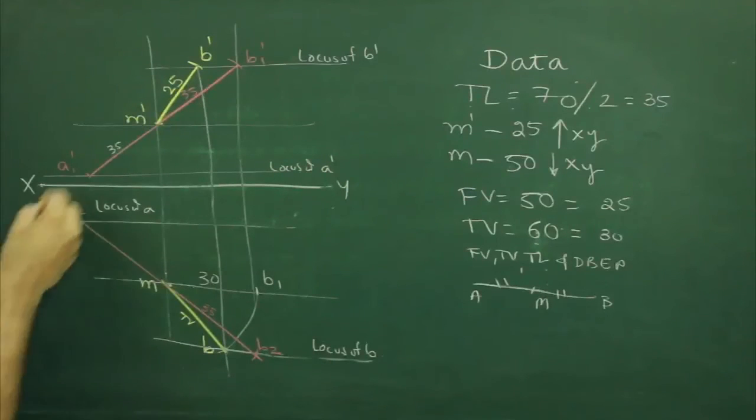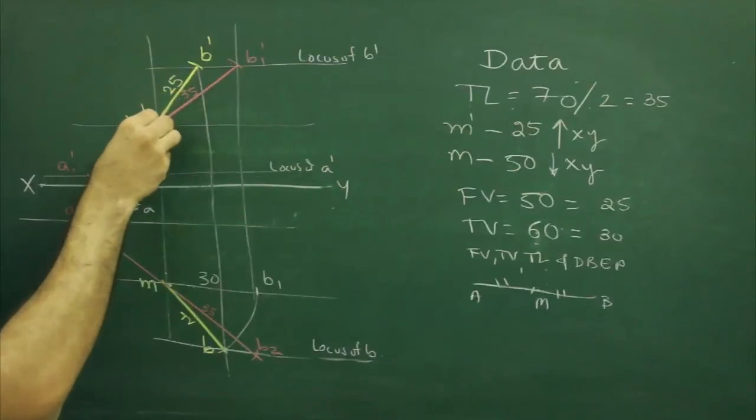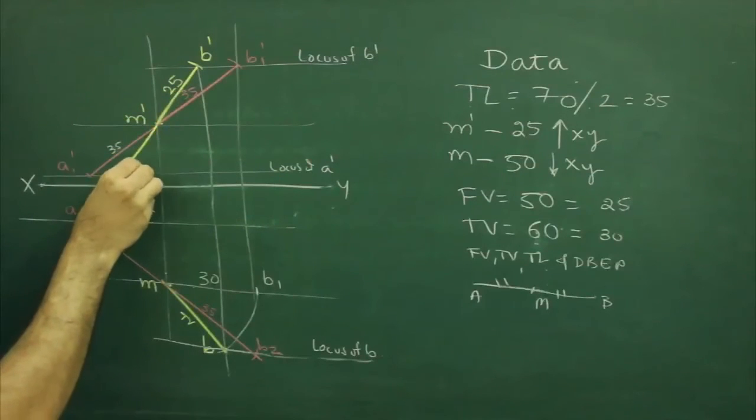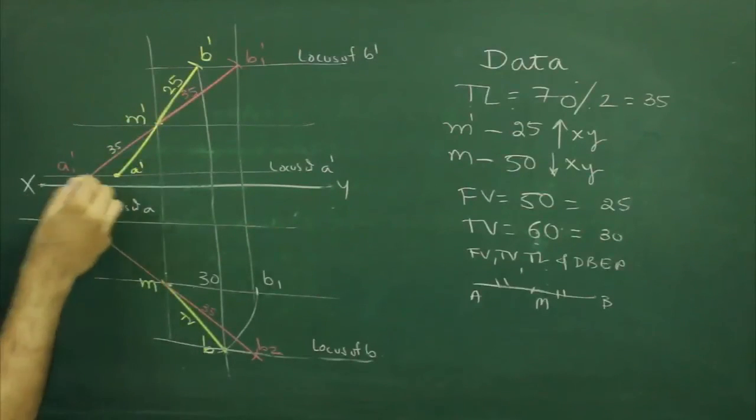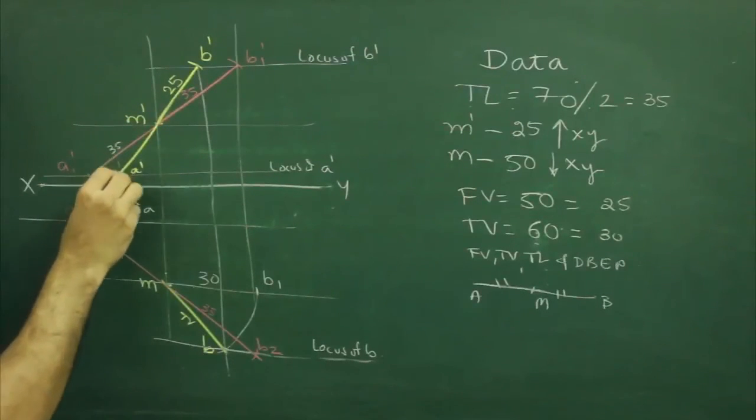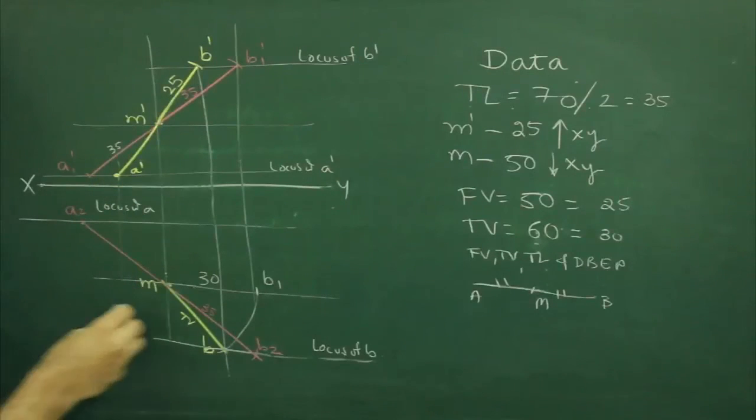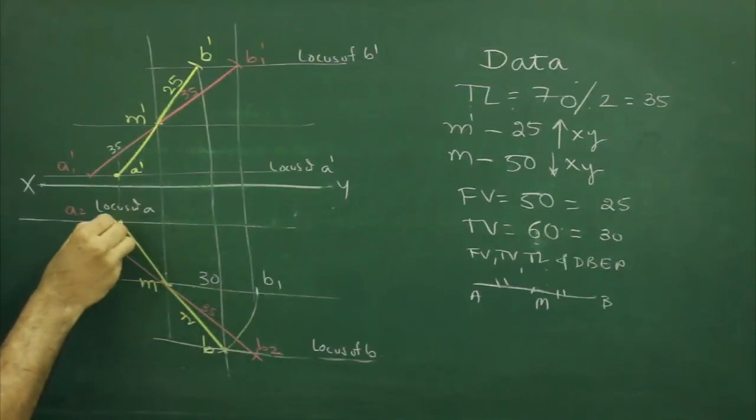Then what we will do? We will just extend 25 from M dash. So that would be A dash. Same way, we will extend from Bm and it will touch here. That is A. This A dash and A has to be one length, at least a half.